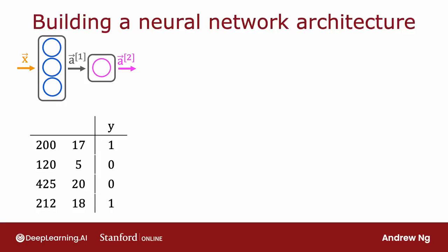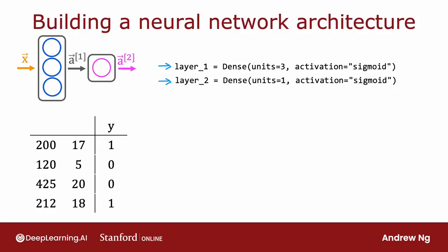It turns out that TensorFlow has a different way of implementing forward prop as well as learning. Let me show you a different way of building a neural network in TensorFlow, which is that, same as before, you're going to create layer one and create layer two. But now,